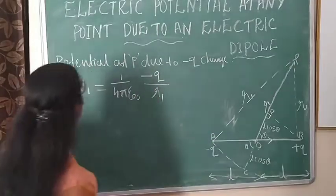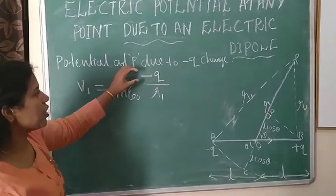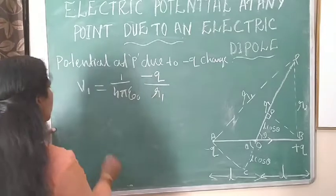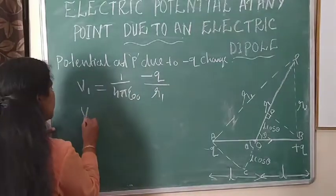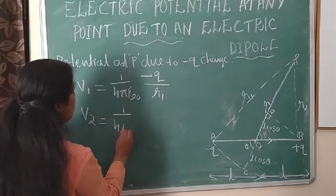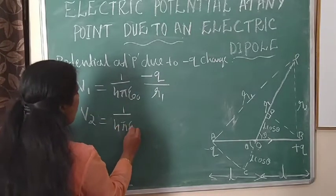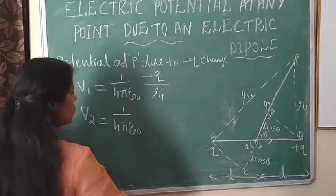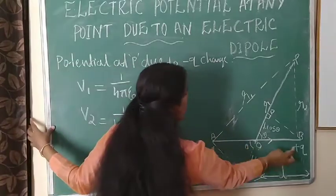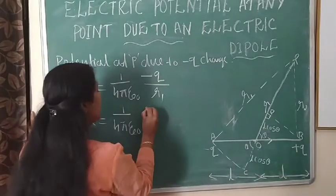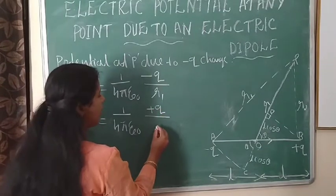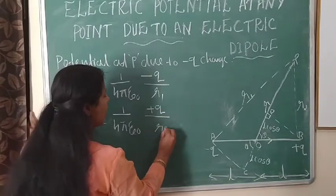Next, potential at P due to plus Q charge. We write V2 is equal to 1 by 4 pi epsilon naught, then charge is plus Q, so Q divided by R2.